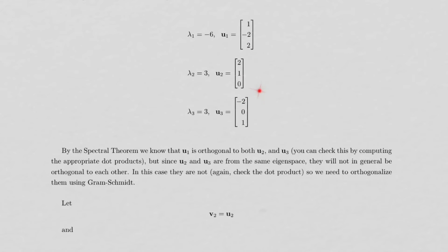Now, because the multiplicity of lambda 2 is 2, these two eigenvectors are actually both in the same eigenspace. The spectral theorem guarantees that U1 is orthogonal to U2 and U1 is orthogonal to U3 because they are in different eigenspaces.